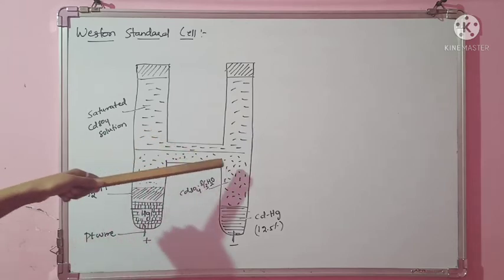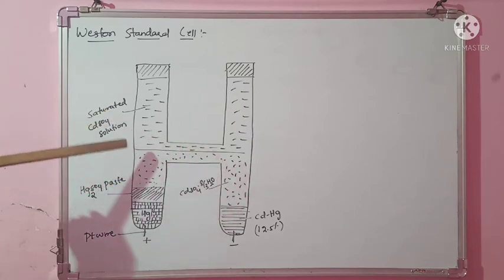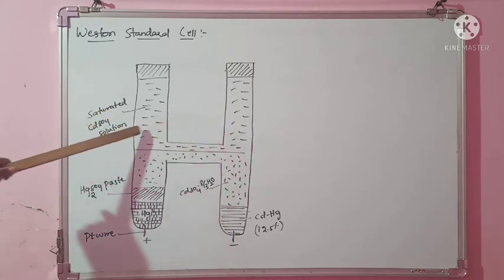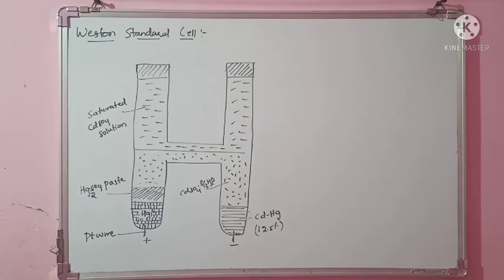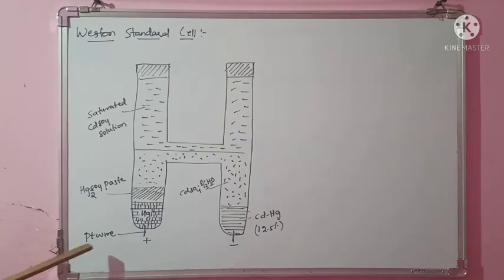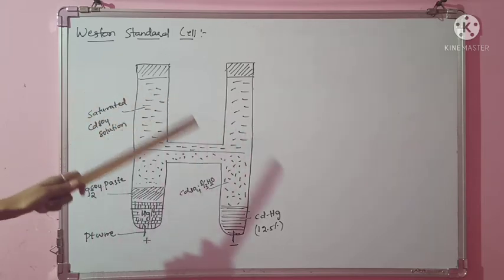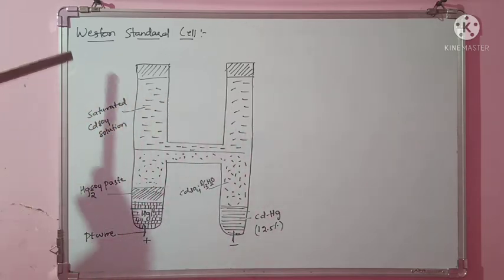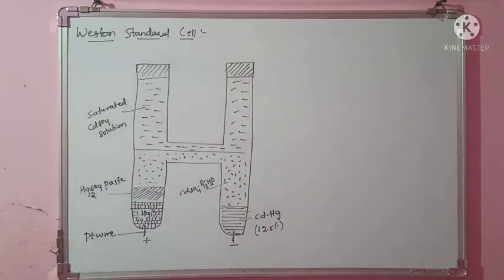Both limbs are covered with saturated cadmium sulfate solution. Both limbs are connected by platinum wires for connection purposes, and these act as inert electrodes. This is all about the construction of the Weston standard cell.